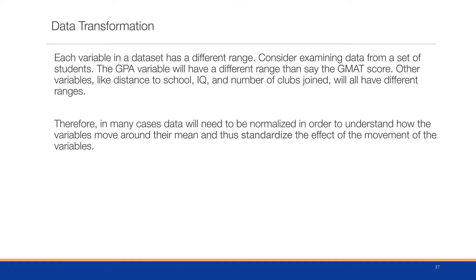When we have a number of different columns, each variable within that dataset in each column is going to have a completely different range. Consider examining data from a set of students. We might have a GPA variable which will have a different range than their GMAT score. They may have other variables like distance to school, IQ, number of clubs joined. They're all going to have different ranges.